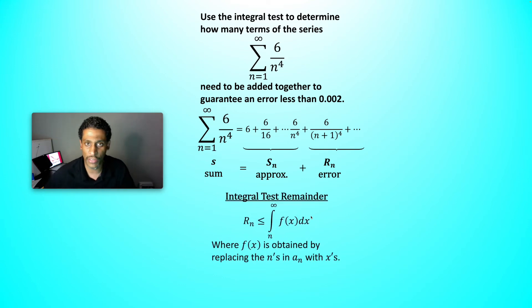The integral test remainder tells us how to do it. It says all you got to do is integrate from n to infinity a function and you can be sure that your remainder after stopping after n terms will be smaller than or equal to that integral. How do you get the function? Take all your n's inside the summation and replace them with x's. So 6 over x to the 4th.